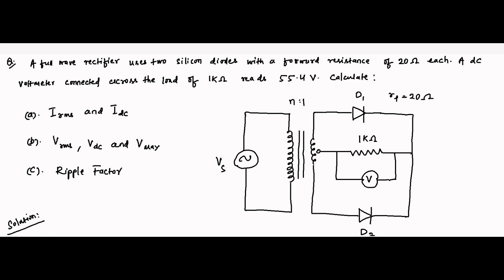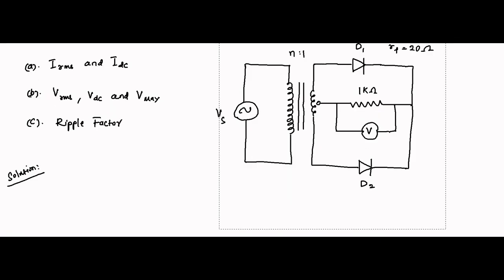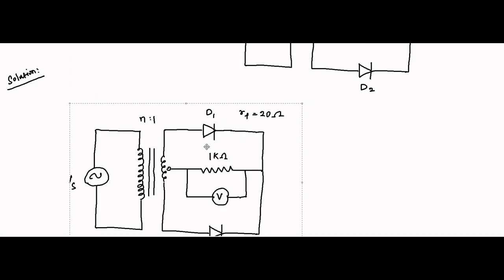You have to first draw the center tap full wave rectifier circuit. A DC voltmeter is connected across the load. There is no information about the supply voltage RMS value or the turns ratio — it is not given — but still we will solve it. The reading across the 1 kilo ohm load resistor is 55.4 volts; this is the DC voltmeter reading, V_DC.